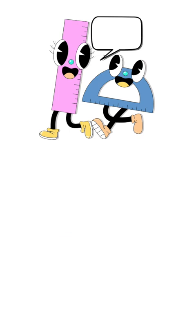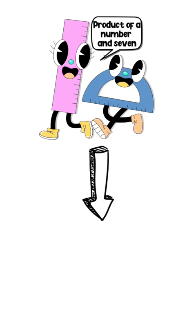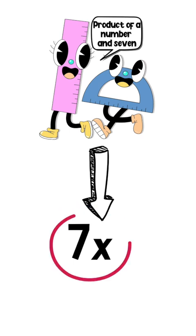My turn. I'm going to give you one, Minnie. What's the product of a number and 7? Good one, Ziggy. The product of a number means multiplication of a number. So the product of a number and 7 would be 7x. 7 times x.